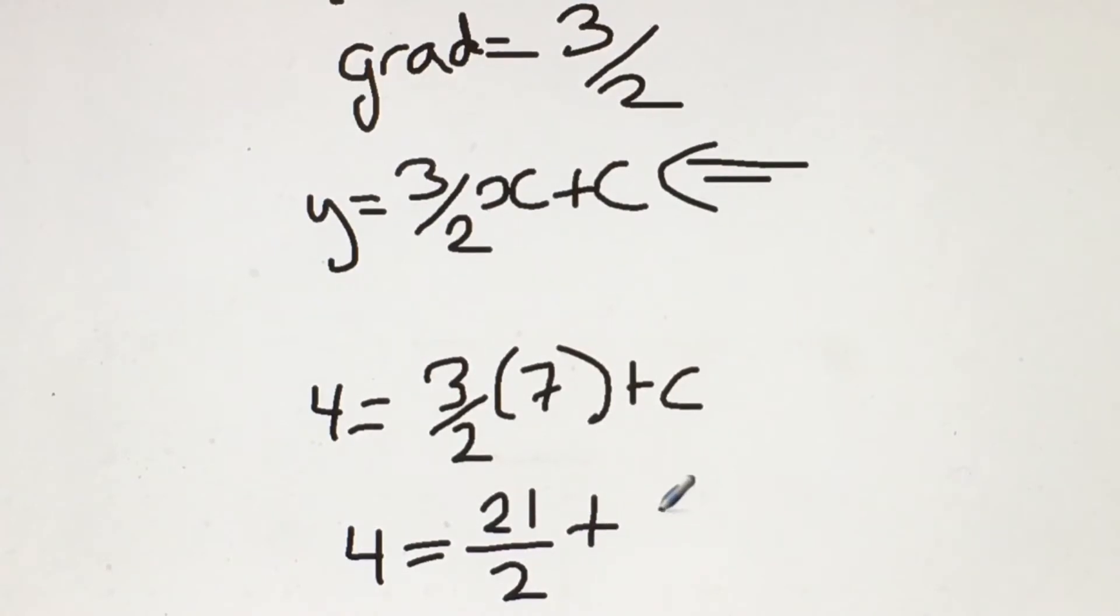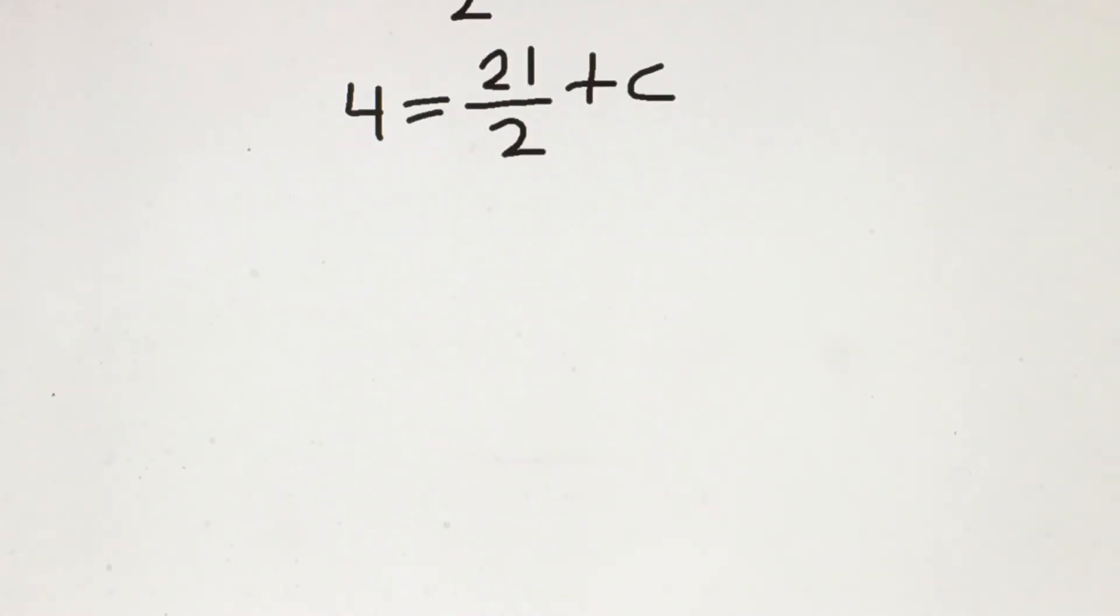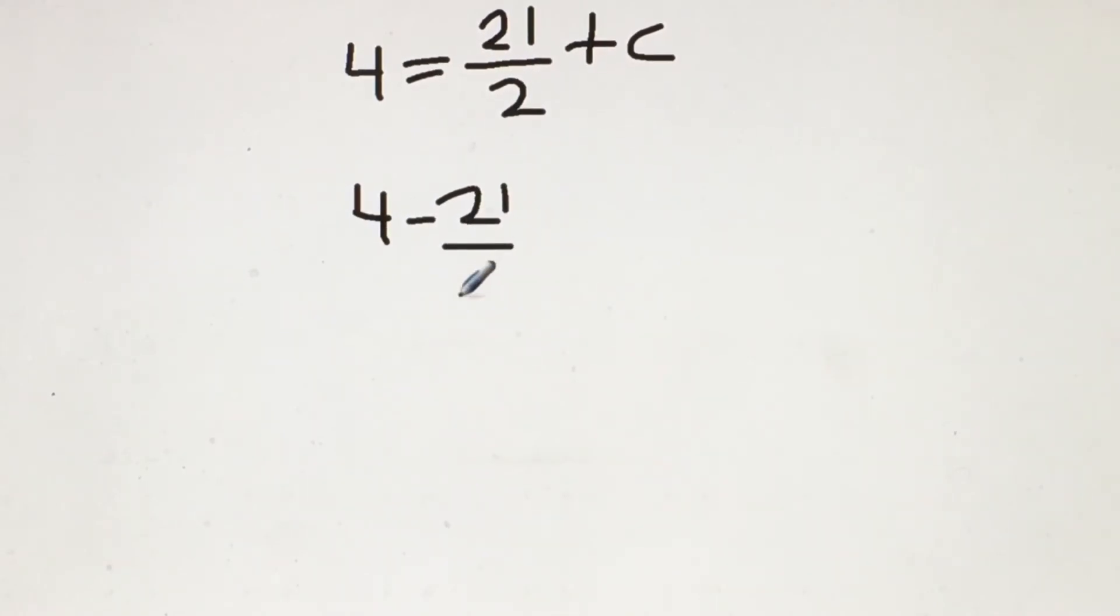I'm now going to make c the subject, so I'm going to subtract 21 over 2 from both sides. So we're left with 4 minus 21 over 2 equals c. Therefore the value of c is equal to minus 13 over 2.